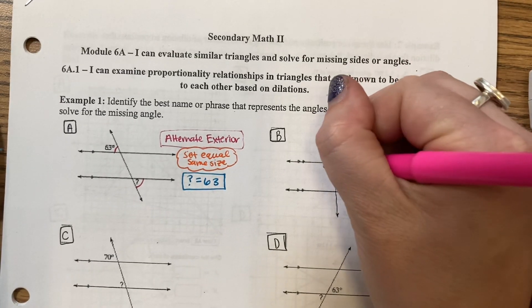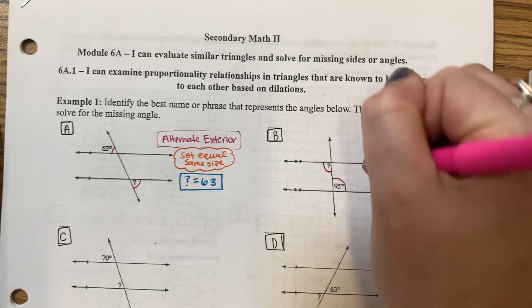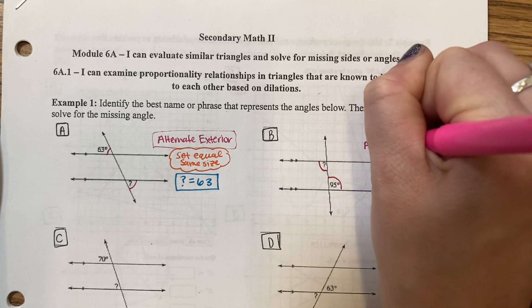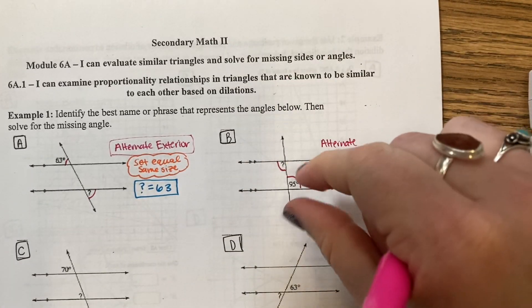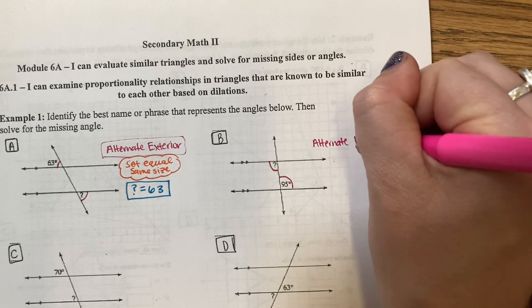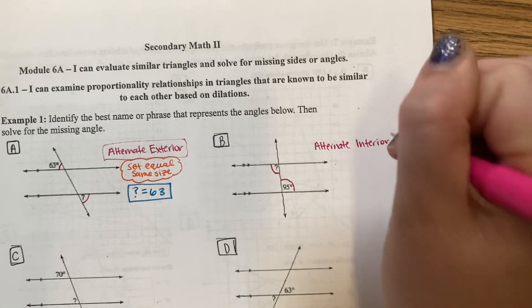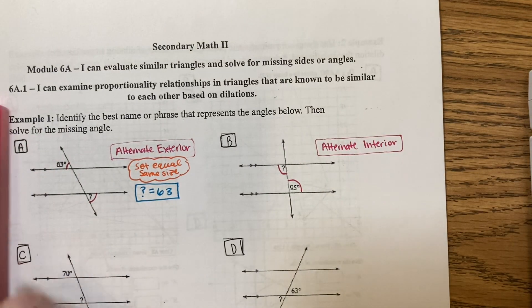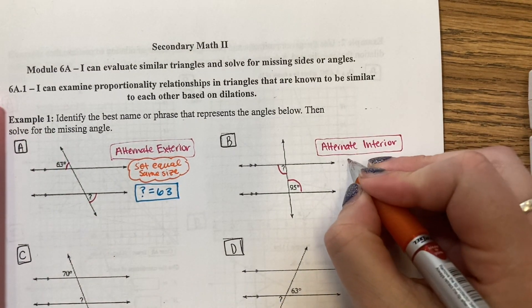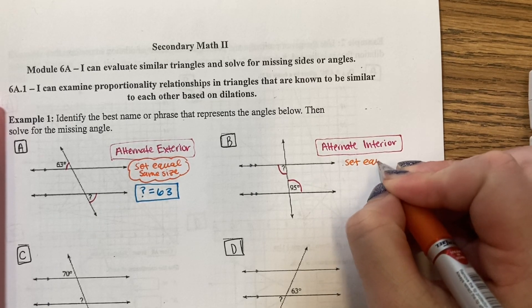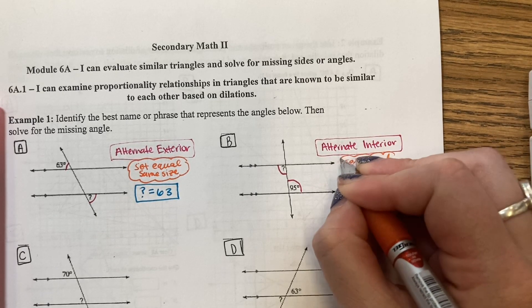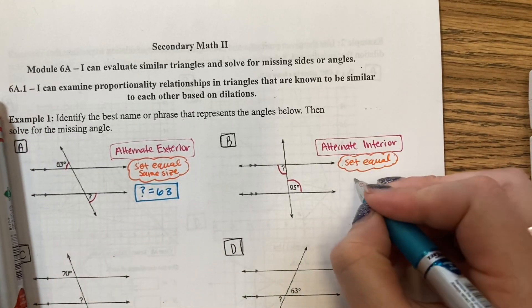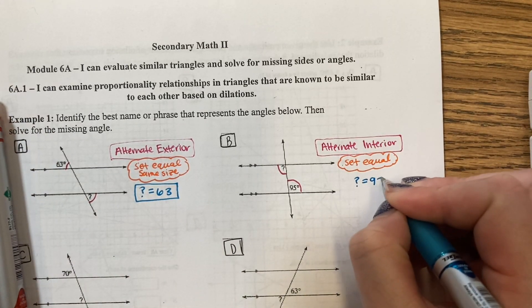Next B. Alternating. They are inside the parallel lines, so they're alternate interior. They are the same size, so I'm going to set them equal. That means that the question mark equals 95.